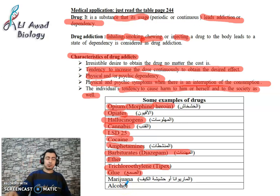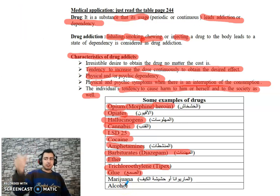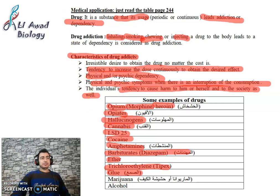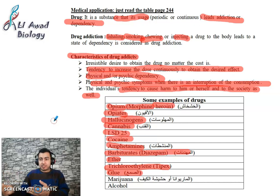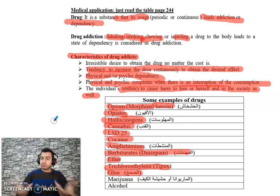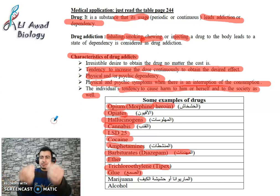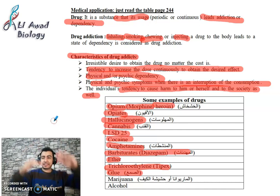Don't let anyone say that alcohol doesn't lead to addiction — alcohol leads to addiction. Caffeine, found in coffee and Nescafé, is a type of drug. Nicotine is a type of drug. All these substances lead to addiction, but at different levels.